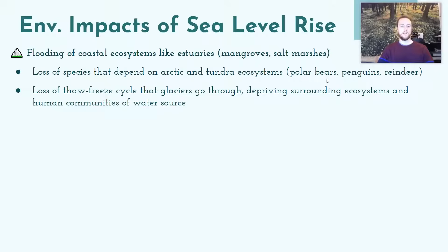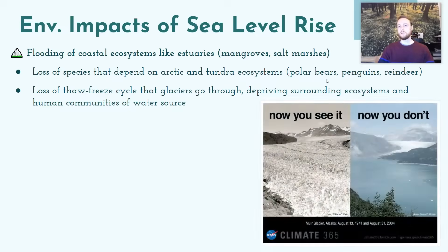In many regions, the freeze-thaw cycle of glaciers is a vital source of water for surrounding ecosystems and human communities. Each winter, glaciers freeze; each spring, thaw releases water into the surrounding area. A NASA image of Alaska from 1941 to 2004 shows significant glacial cover loss in that short period, depriving the ecosystem of this important freeze-thaw water source.